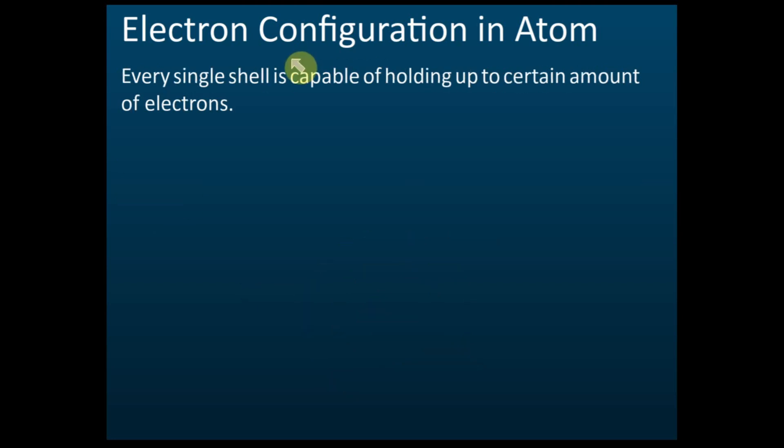According to Niels Bohr, every single shell is capable of holding up to a certain number of electrons. A shell can only hold a certain number of electrons before it becomes full — we cannot fill a shell with unlimited electrons. There is a limit to how many electrons a shell can hold.